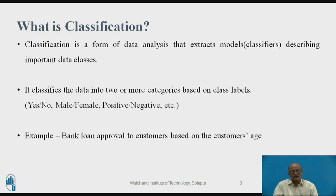Classification is a form of data analysis that extracts models describing important data classes. It classifies the data into two or more categories based on class labels. For example, it may be in the form of yes or no, or maybe the category of male or female, or positive or negative. The things are classified into two categories or into different numbers of categories.